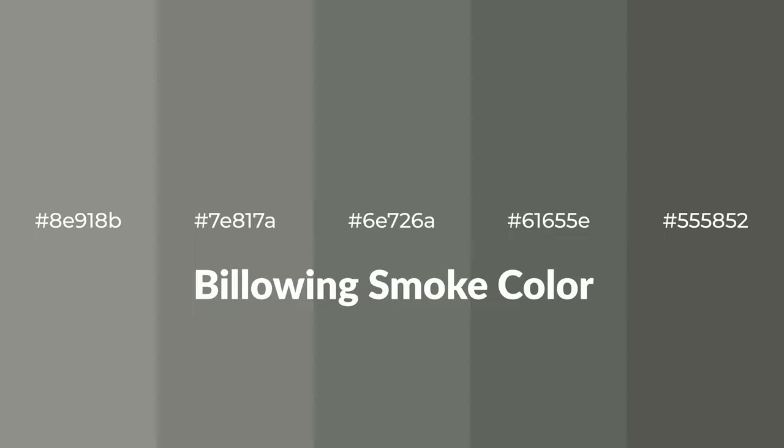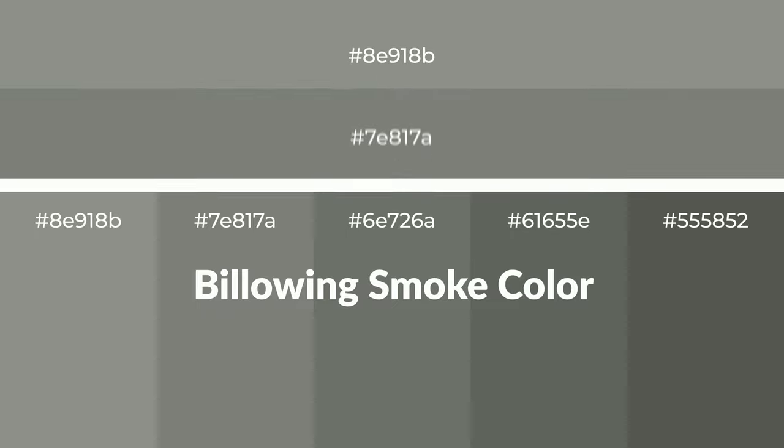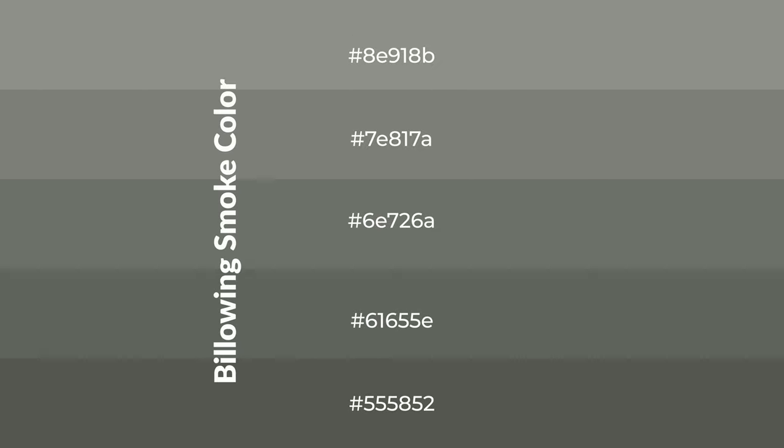Cool shades of billowing smoke color with gray hue for your next project. To generate tints of a color, we add white to the color. Tints create light and exquisite emotions. To generate shades of a color, we add black to the color, and it is used in patterns, 3D effects, and layers. Shades create depth and drama.